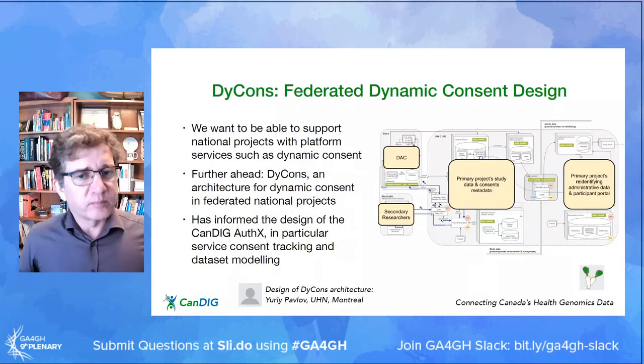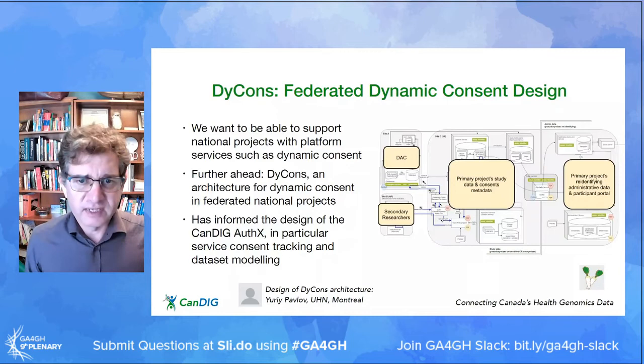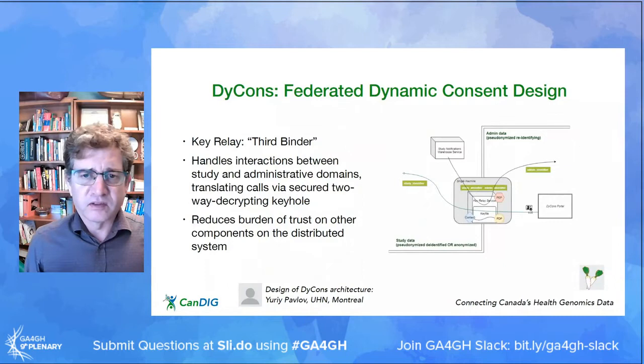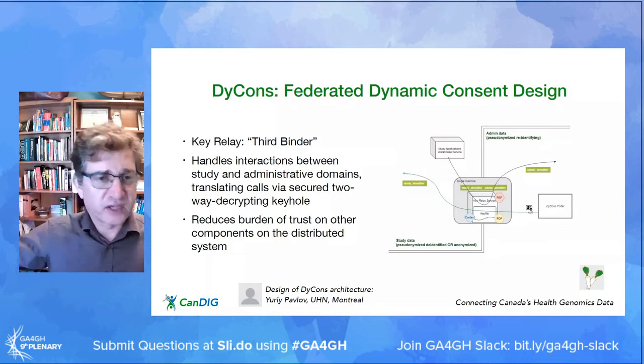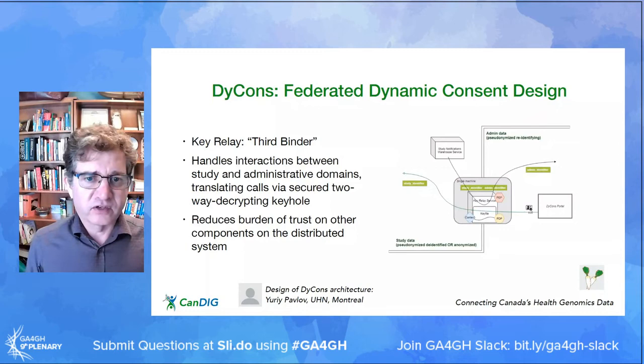We want to be able to support national projects with platform services like dynamic consent. A little further ahead, we have DICONS — an architecture for dynamic consent in federated national projects. We're still prototyping it, but it's already informed CanDIG's authentication and authorization, especially around service consent tracking and dataset modeling. It's built around an encrypted third binder which handles interactions between study data and administrative data, keeping those completely separate and reducing the burden of trust on other components in the distributed system.